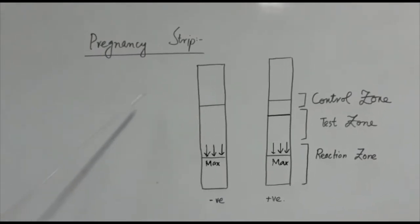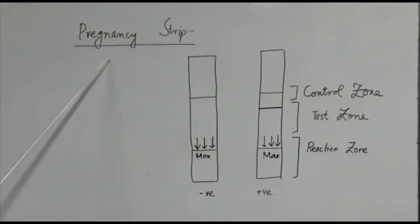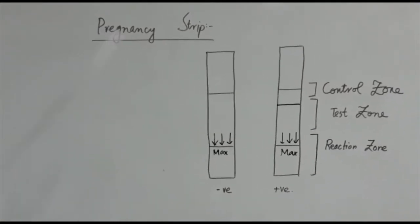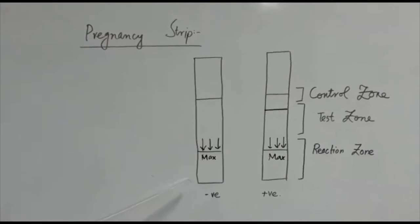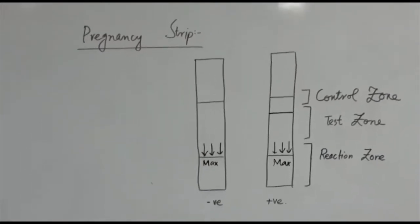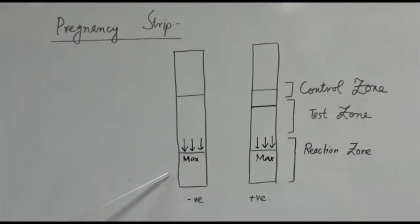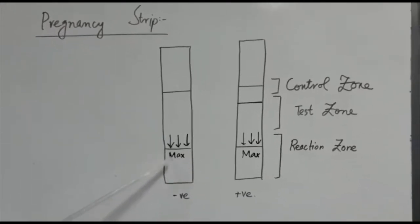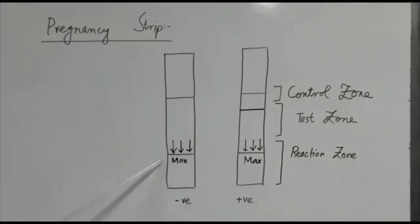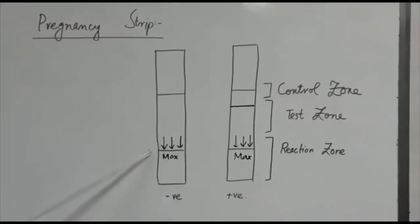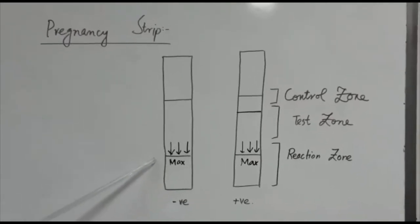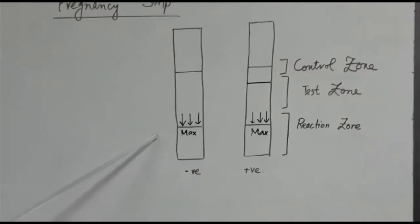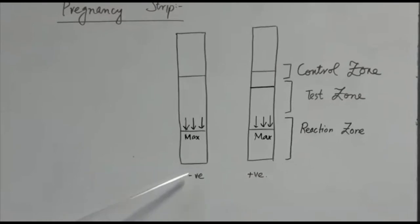Let us see the structure of our pregnancy strip. Our pregnancy strip has a lower marking which shows maximum with downward arrows. This marking shows that you should not dip the pregnancy strip above this level in the urine sample.